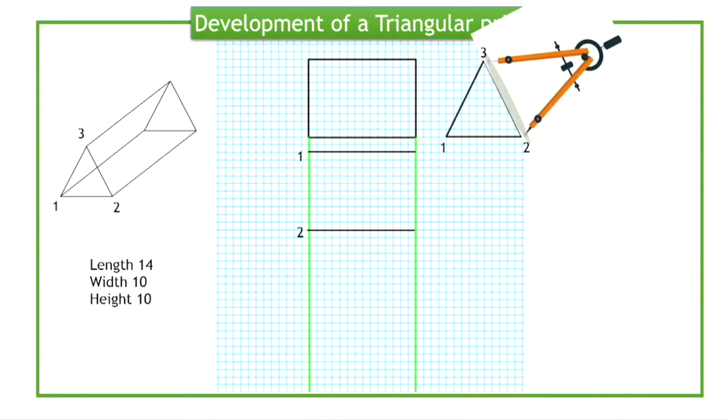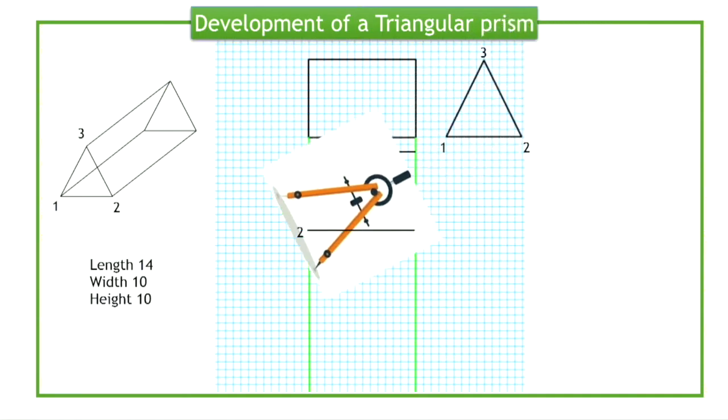The length of side 2, 3 is then transferred, with the help of compasses, again.